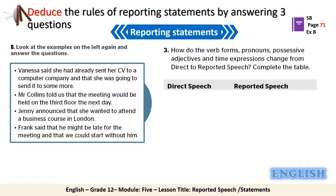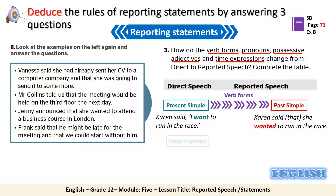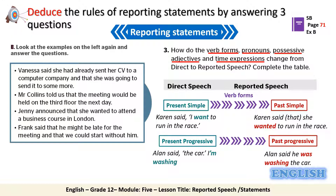We continue with the same activity. Question three asks you to find out how the verb forms, the pronouns, the possessive adjectives, and the time expressions change when we report statements. Generally speaking, when we report people's exact words we usually move backward in time. The present simple changes to the past simple — for example, 'want' becomes 'wanted.' Next, the present progressive changes to the past progressive — for example, 'am washing' changes to 'was washing.'